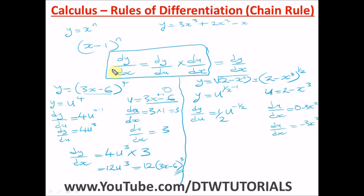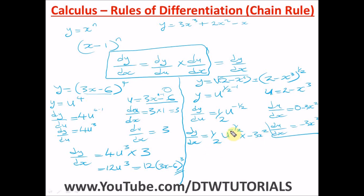Now apply the chain rule: dy/dx = dy/du × du/dx = (1/2)u^(−1/2) × (−3x²). Simplifying, the negative exponent brings u^(1/2) to the denominator, giving us −3x² divided by 2u^(1/2).